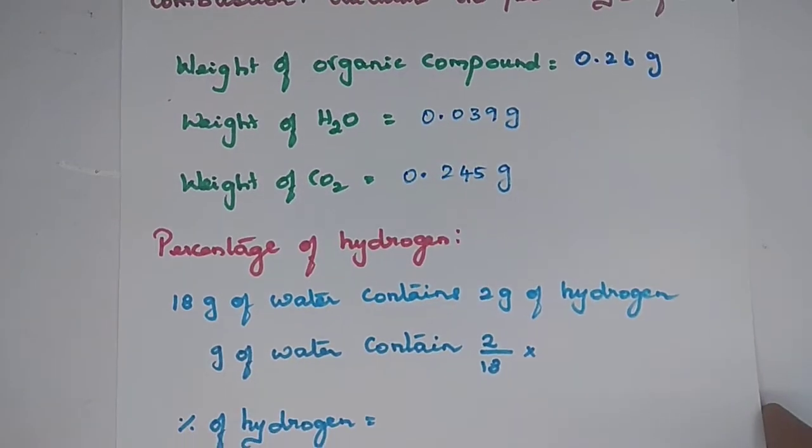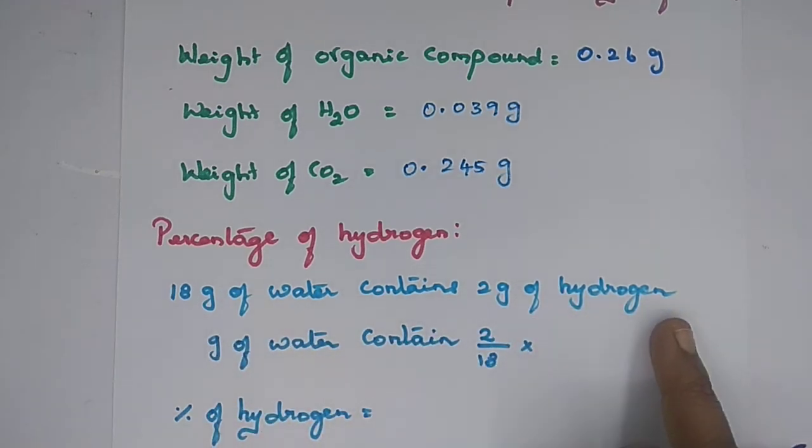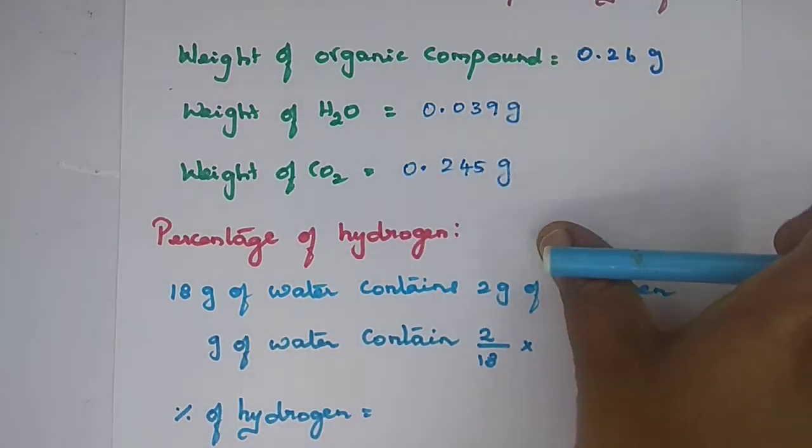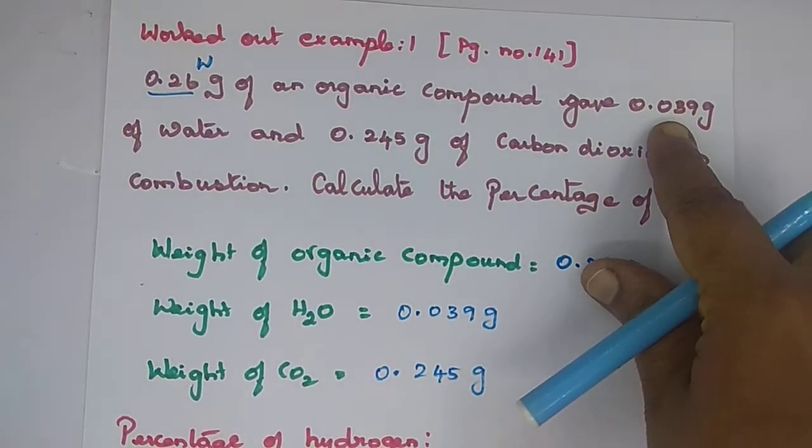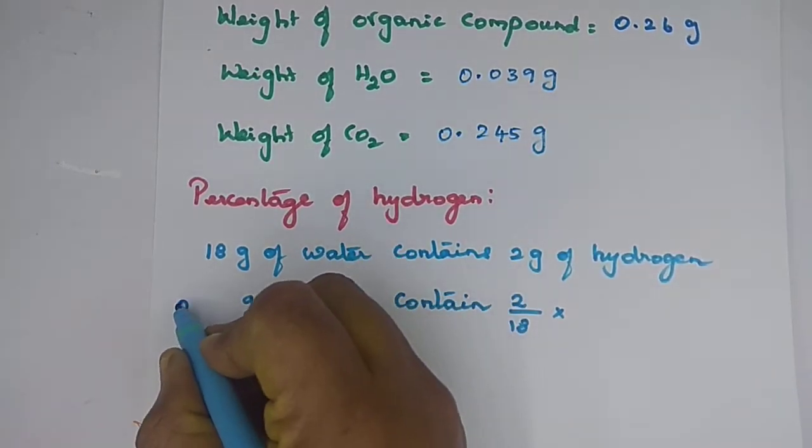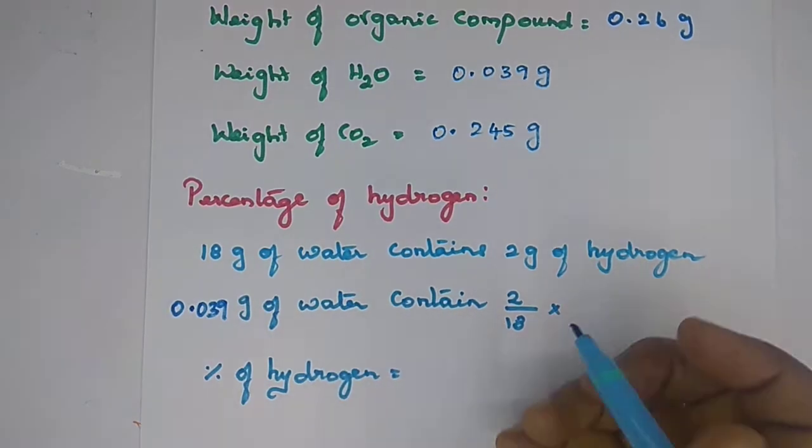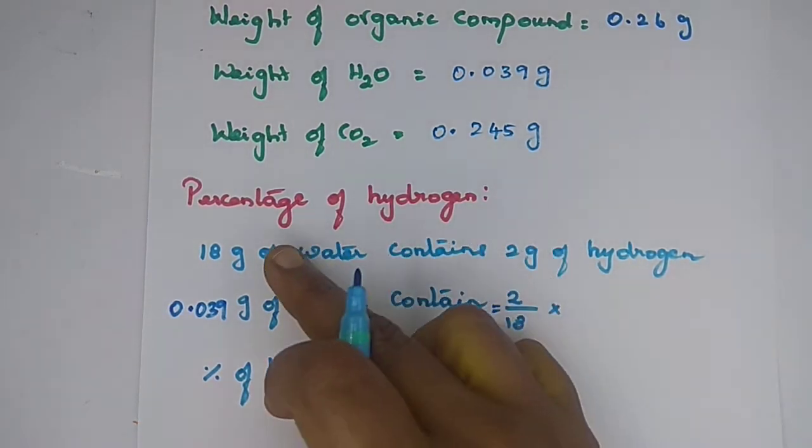So this is the weight of water. Now the percentage of hydrogen: 18 gram of water contains 2 gram of hydrogen. Now 0.039 gram of water contains 2 by 18 times 0.039 gram of hydrogen.